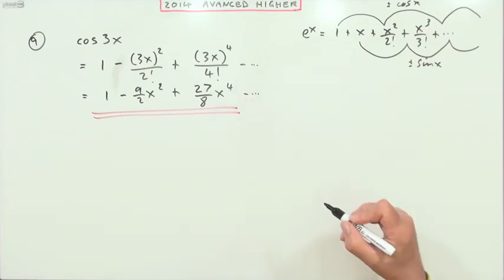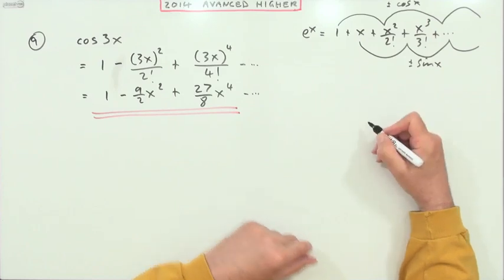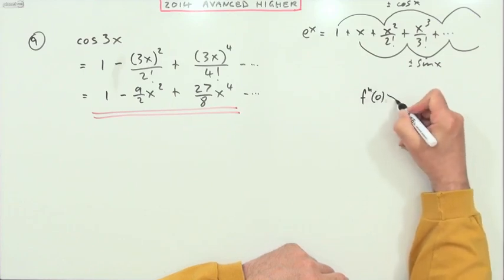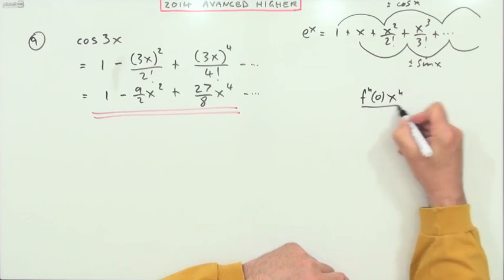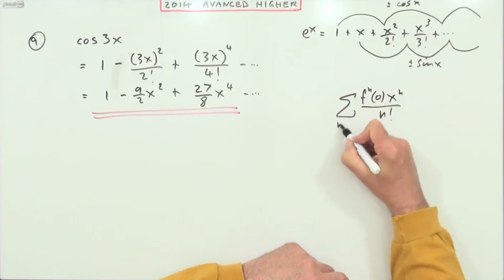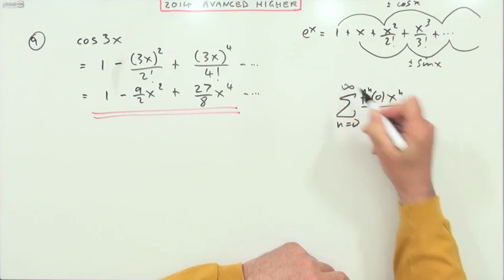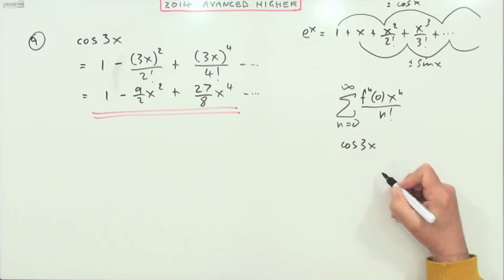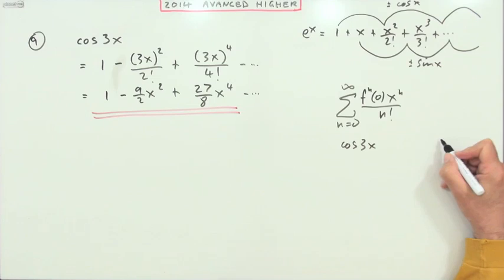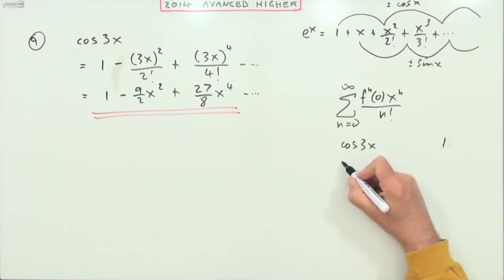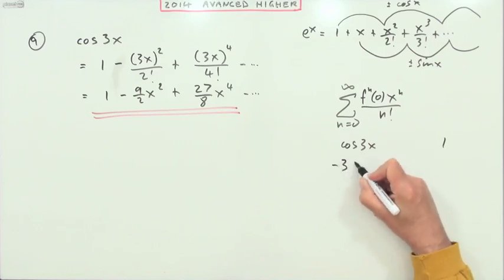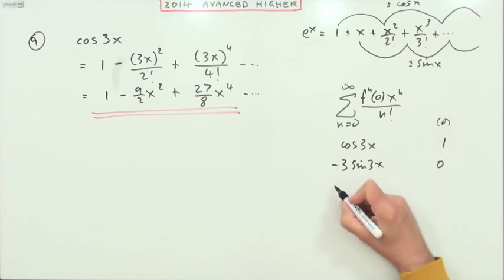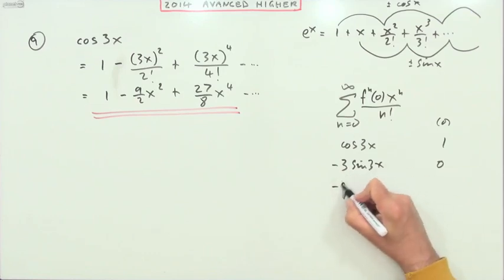But you may have set it all out using the expansion for the Maclaurin series, which is the nth derivative evaluated at 0 to produce the x^n term over n!, which is this going from n=0 to infinity. So it means you work out the various derivatives. You start off with cos(3x) and work it out at 0. So cos(3x) at 0 would be 1. Then the derivative is -3·sin(3x), but that evaluated at 0 is just 0.